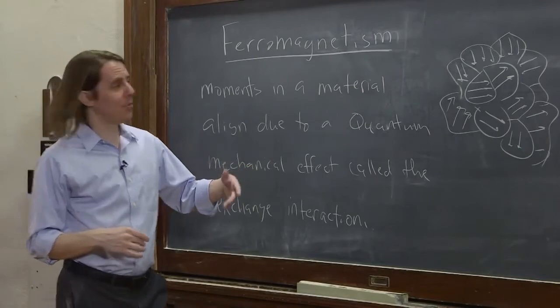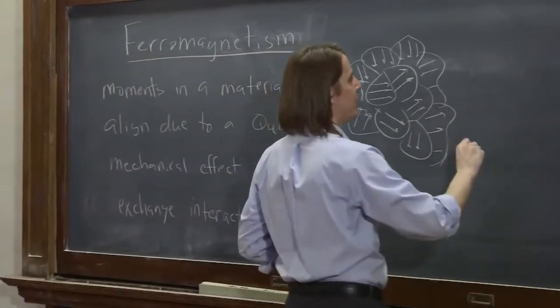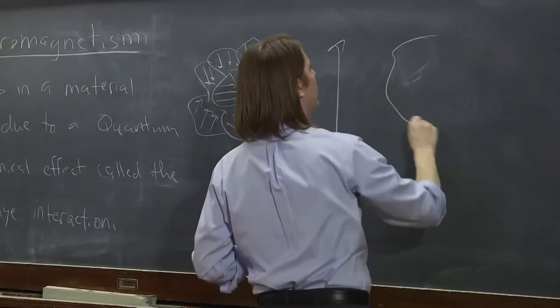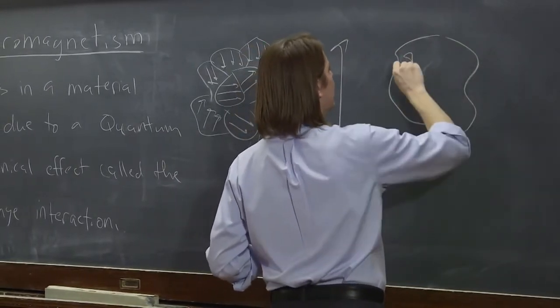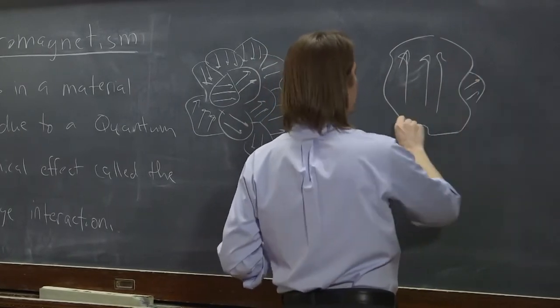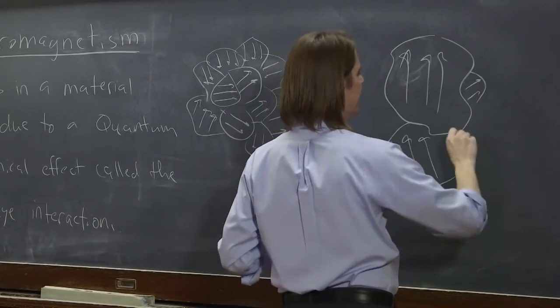But what happens is, kind of like in paramagnetism, when you apply a big external B field, you can align, or actually, you tend to kind of grow domains. There might still be a couple that aren't aligned, that are very well aligned with a magnetic field, like this.